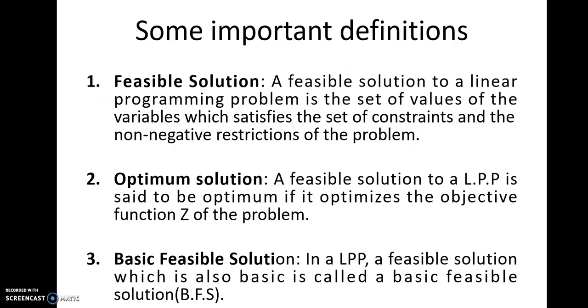Some important definitions. First one is feasible solution. A feasible solution to a linear programming problem is the set of values of the variables which satisfies the set of constraints and the non-negative restrictions of the problem. Second, optimum solution. A feasible solution to a LPP is said to be optimum if it optimizes the objective function z of the problem.